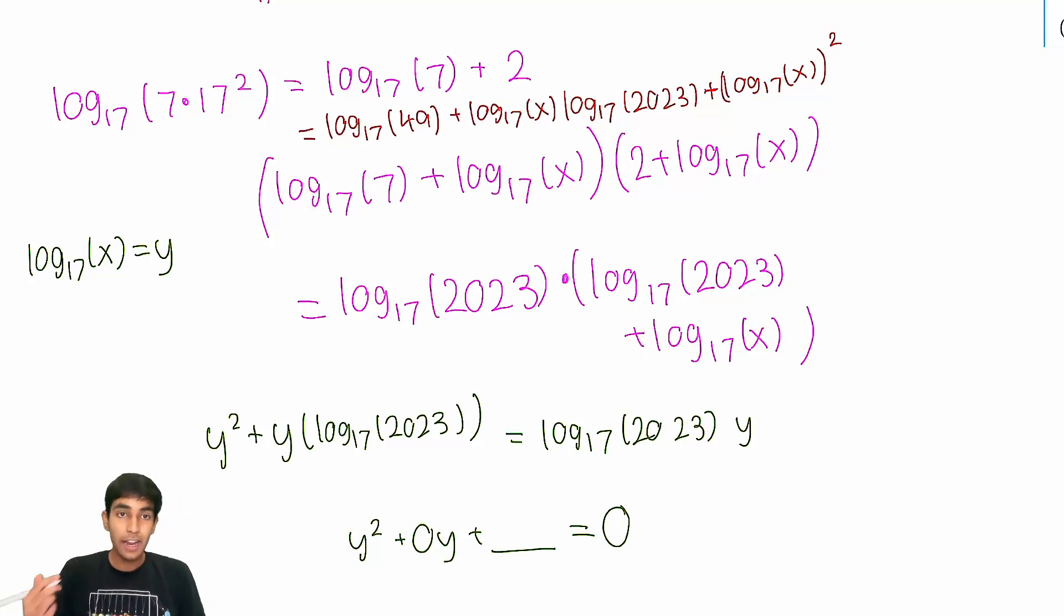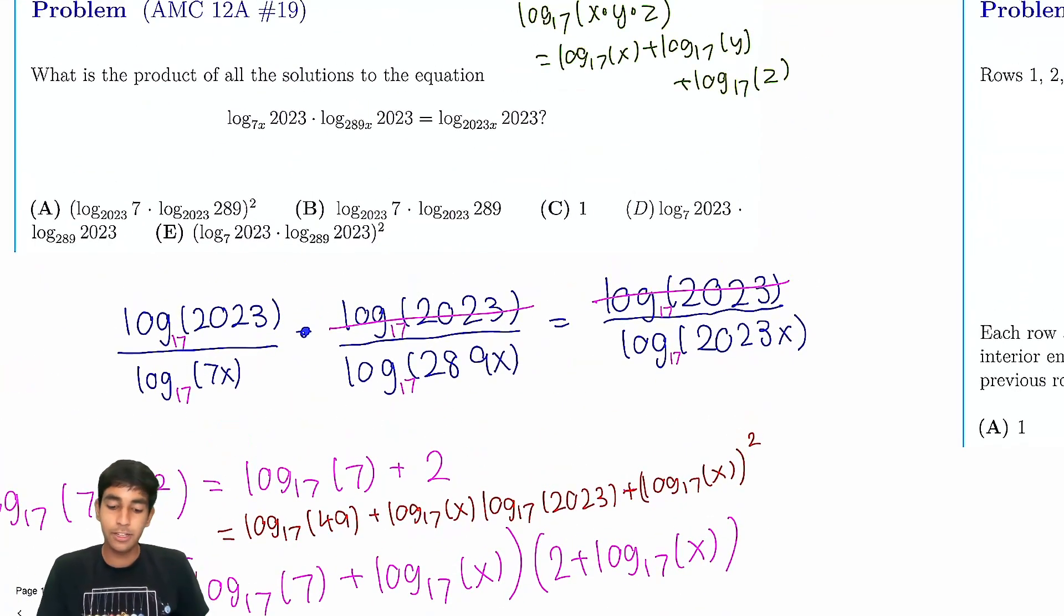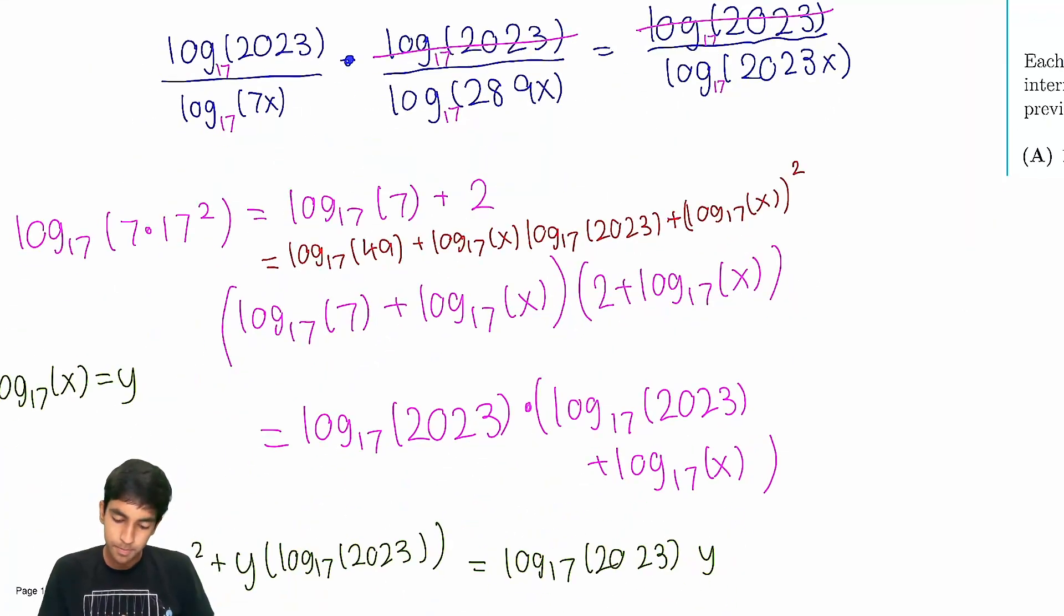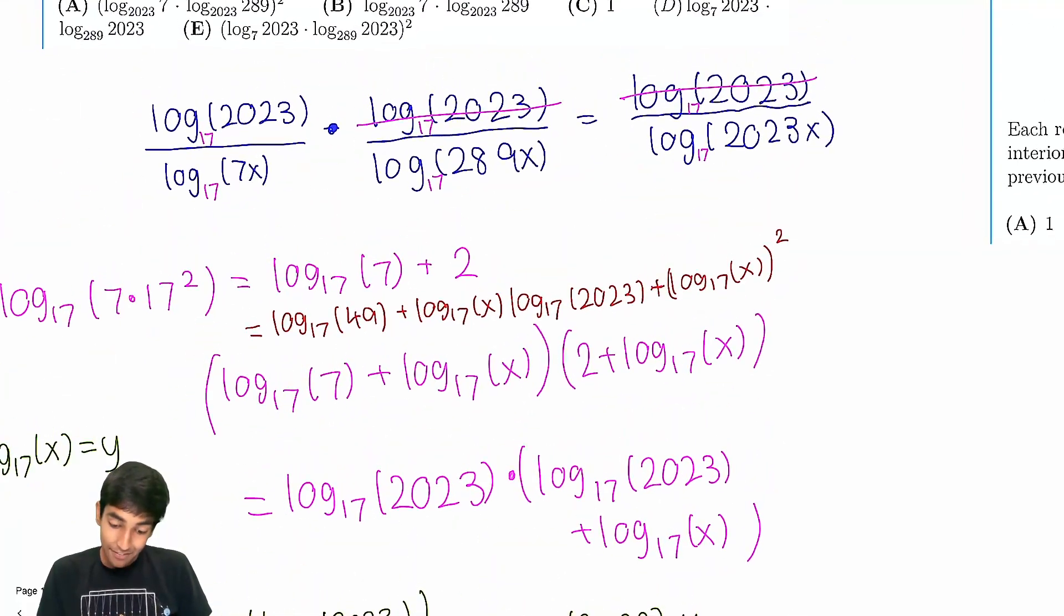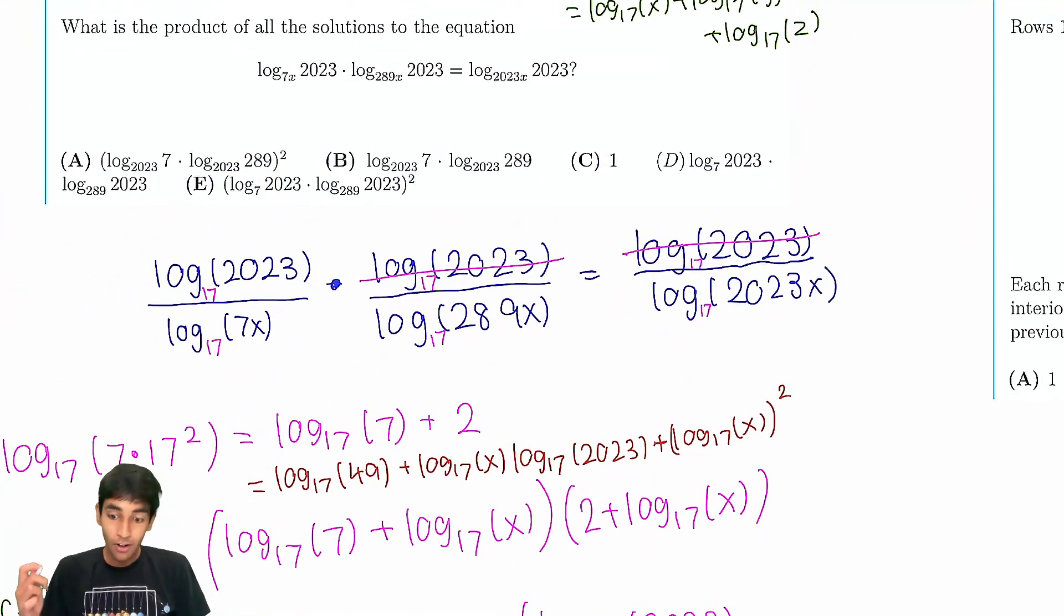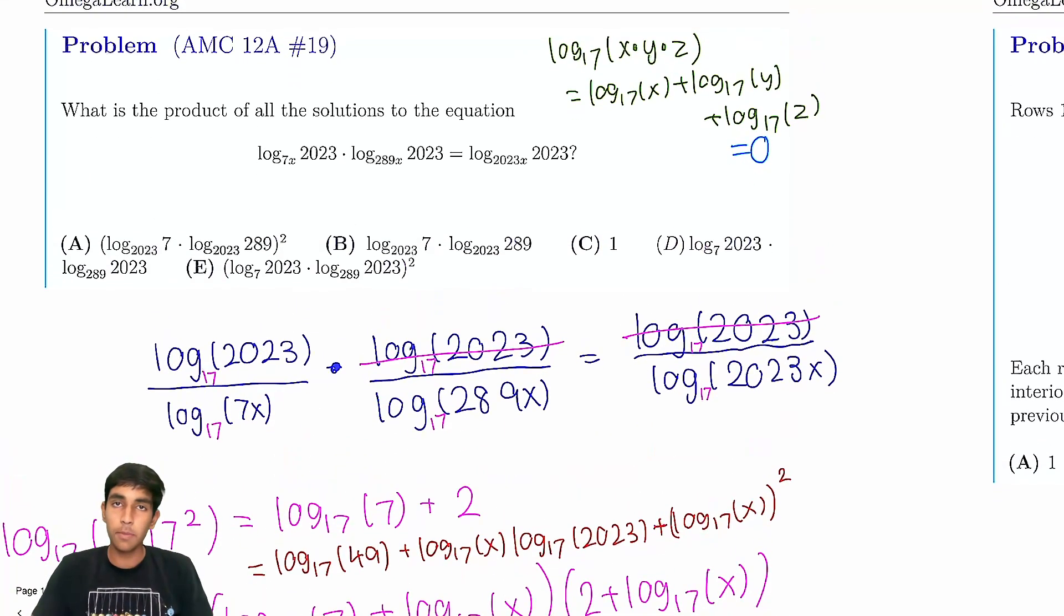We get that y², there's some quadratic in y, there's 0y coefficients, and then there's some constants we didn't really bother calculating, there wasn't really a point. But from this, we see with Vieta's, the sum of the solutions is 0, or negative 0, which is just 0. And if the sum of the solutions is 0, basically that means this whole sum is just equal to 0. It doesn't matter however many roots there are. The sum of all the log₁₇s of the roots is 0.